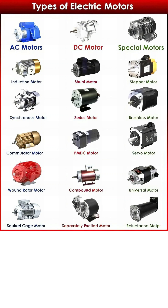In the central column, we find DC motors, which operate on direct current and are known for their excellent speed control. Here we see the shunt motor, where the field winding is connected in parallel, providing good speed regulation, and the series motor, with its field winding in series, which delivers very high starting torque for applications like cranes and power tools.